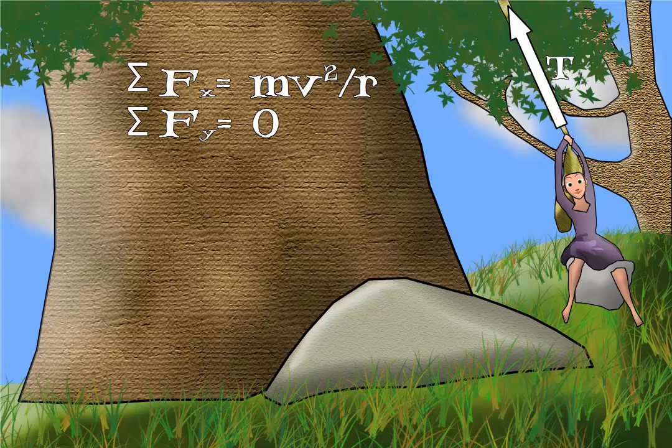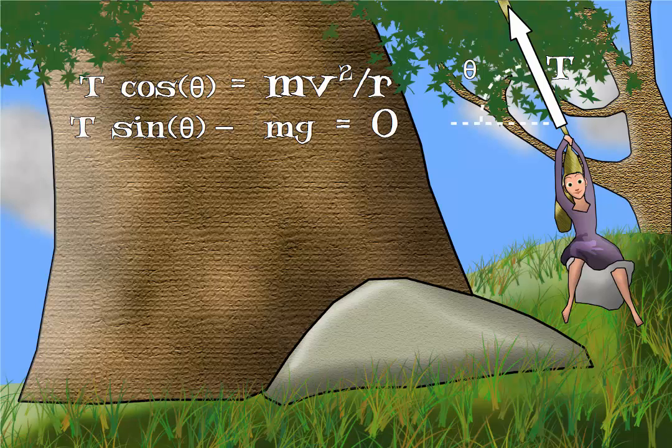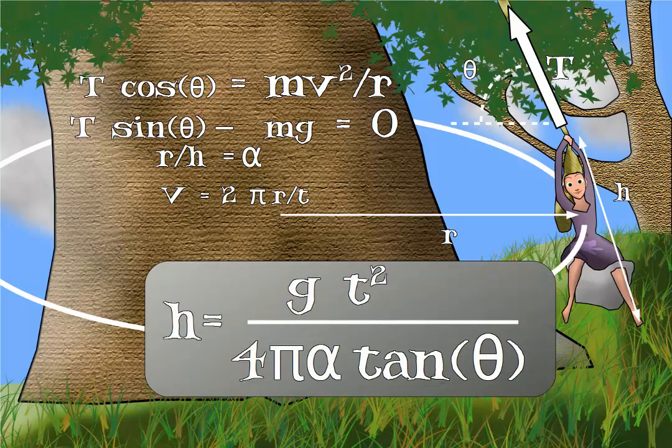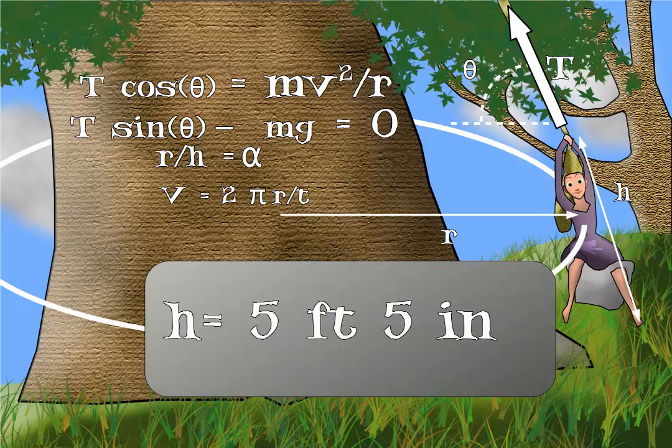Newton's second law tells us that the tension in her hair is also counterbalancing her weight. Knowing that her hair is both supporting her weight and keeping her in a circle, we can figure out her height if we know the angle that her hair is pointing at and the relative size between her height and the radius of the circle that she is spinning in. After a fair bit of algebra, we arrive at an estimate of 5 feet 5 inches.